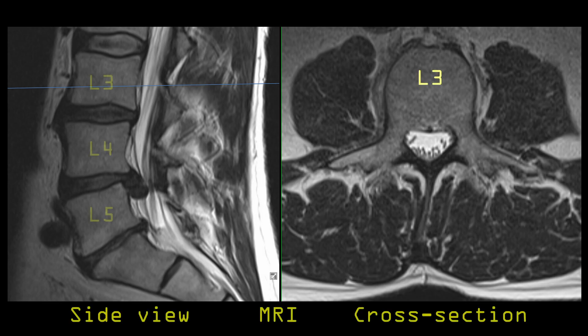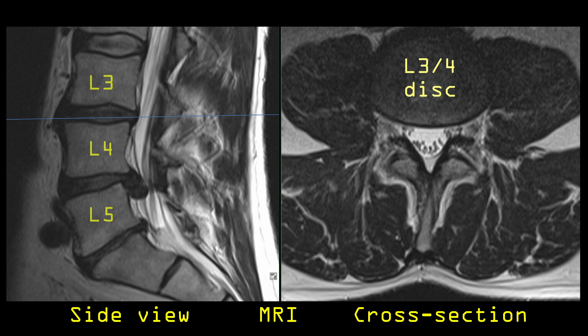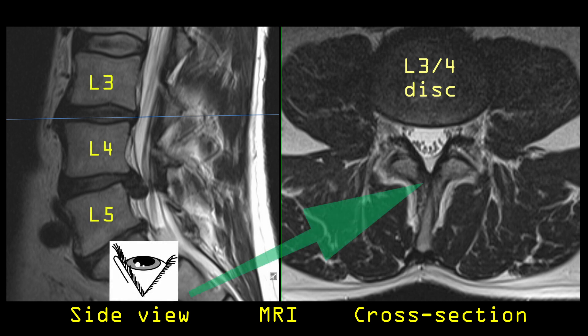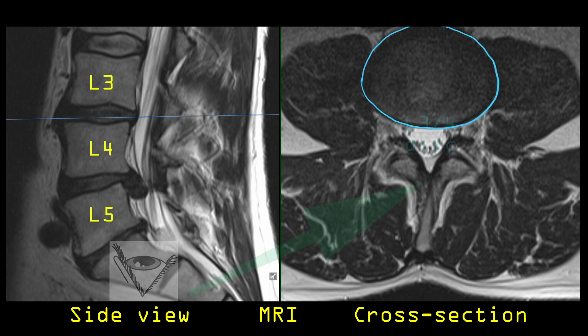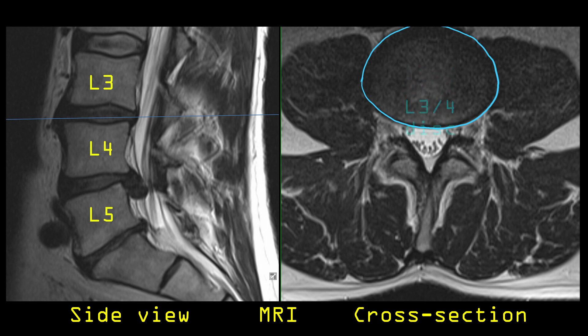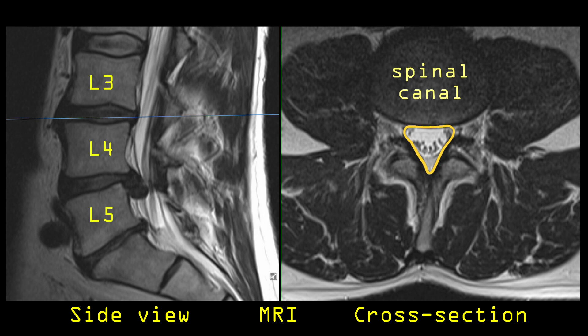Now let's take a look at this patient's MRI. On the left, you can see a side view of the spine. On the right is a cross-section view of the spine as if you're looking up at the spine towards the head. We're going to start by looking at the disc between L3 and L4 — this disc has a nice uniform border and it looks great. Just behind the disc is this triangular area which is the spinal canal in cross-section, full of spinal fluid which appears white. The dots in the middle of the spinal fluid are the spinal nerves.